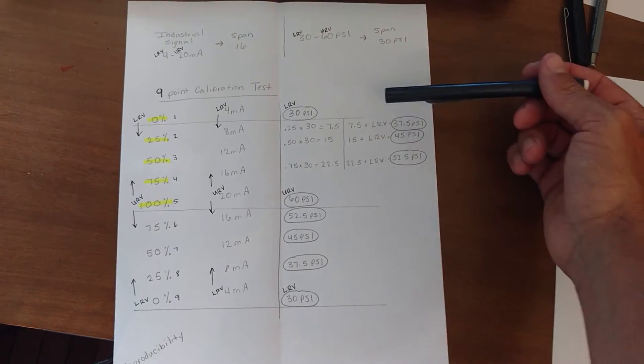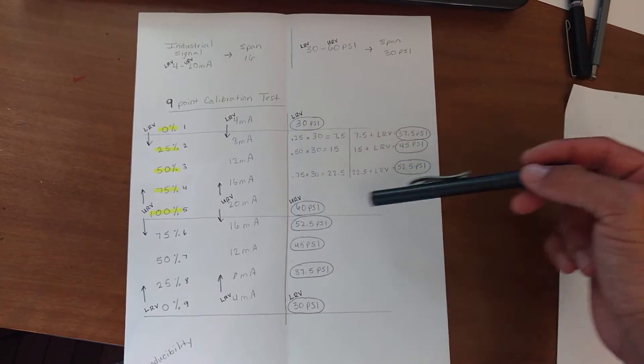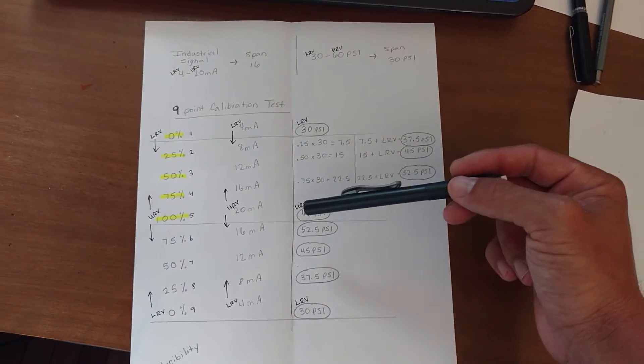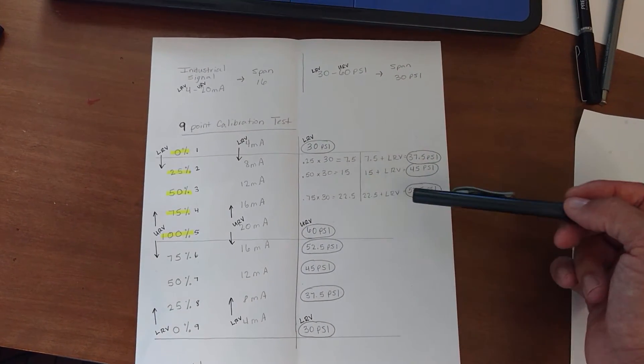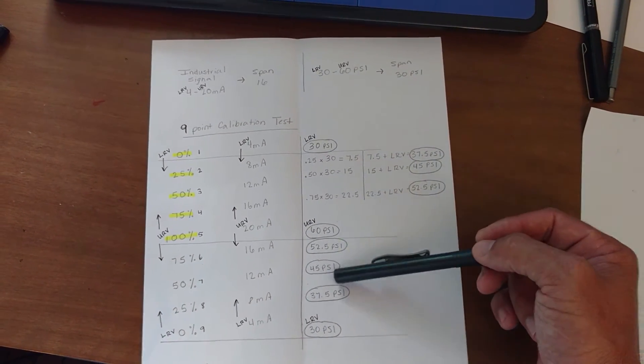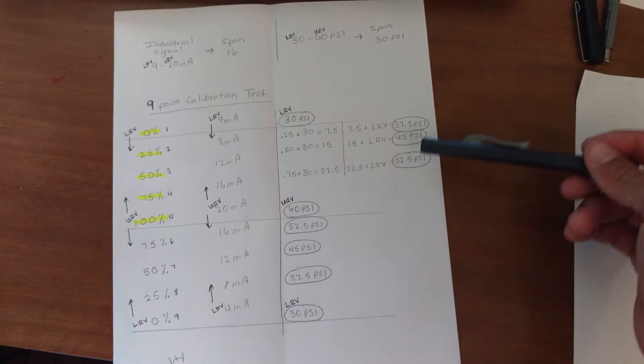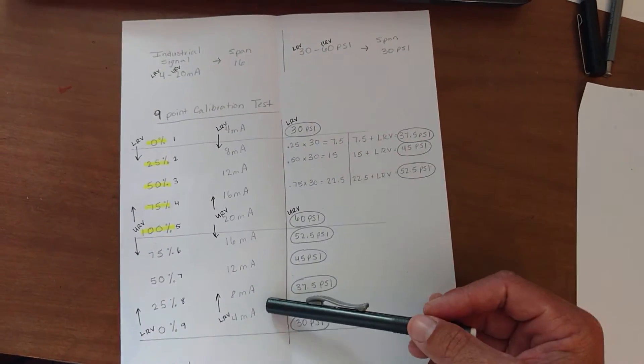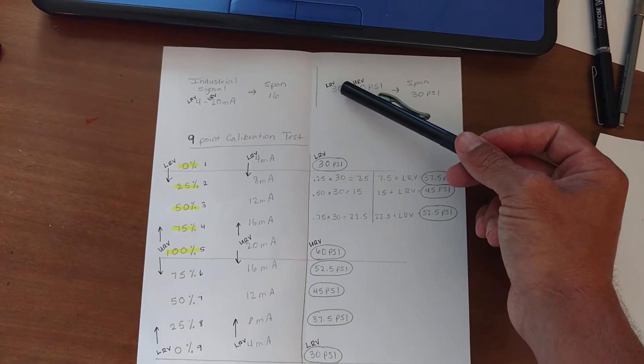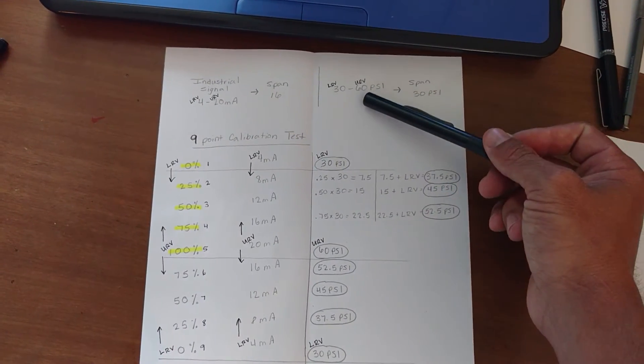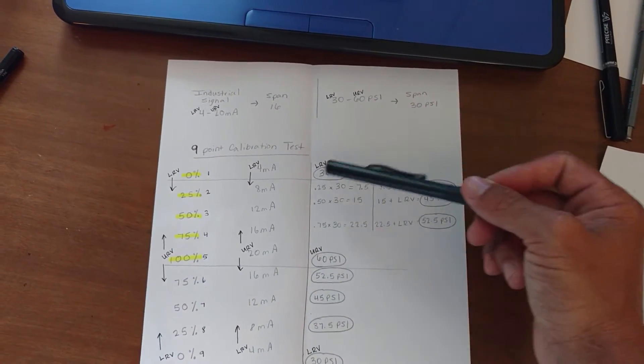So how do we get our nine points now? Well, we don't really have to worry about this, because we know that once we get the first section here, these numbers, it's really just in reverse. As you can see, 52, 52, 45, 45, 37, 37, 30, 30. So now we only need to focus on these, but look at this. We're given our LRV, which is 0% of our span. That's our LRV right here, 30 psi. We're given our URV, 100% of our span. So really, we've got those, so now we just need to focus on this.